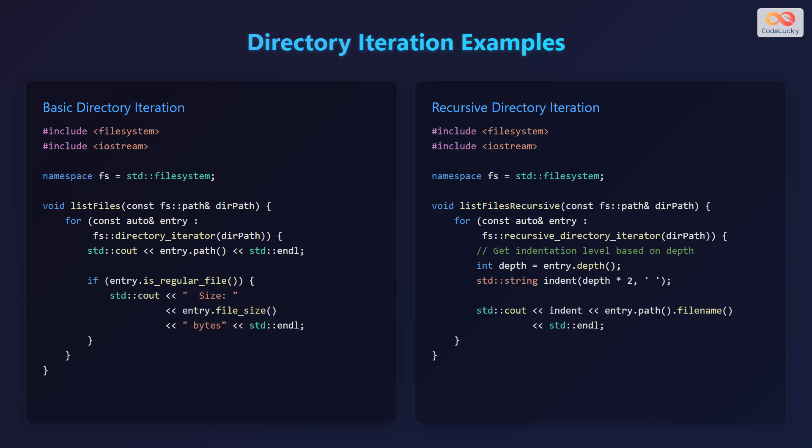Second, recursive directory iteration. Again, include the necessary headers and create the namespace alias. The function list_files_recursive() takes a const reference to an fs::path named dirpath. It iterates through the directory recursively using a for loop and a recursive_directory_iterator, calculates the indentation level based on the depth of each entry, and prints the file name with appropriate indentation.